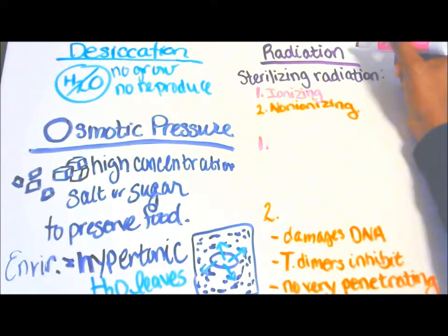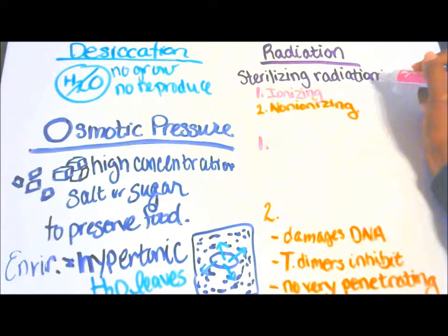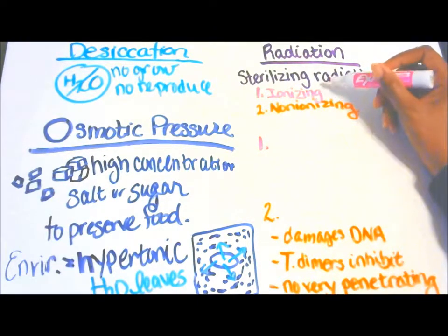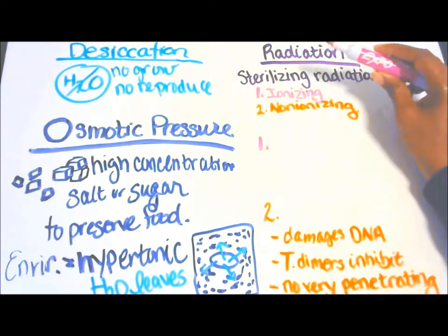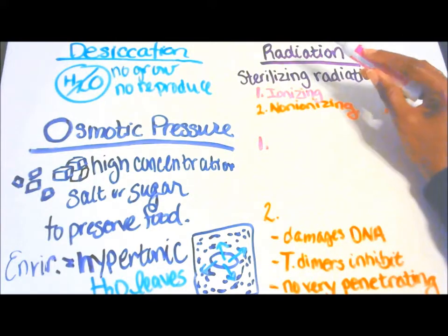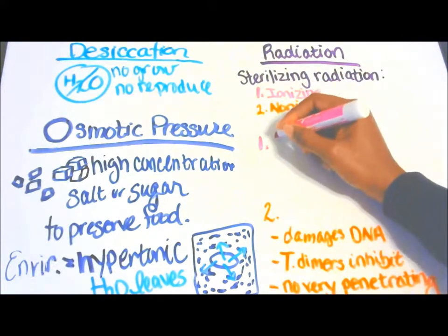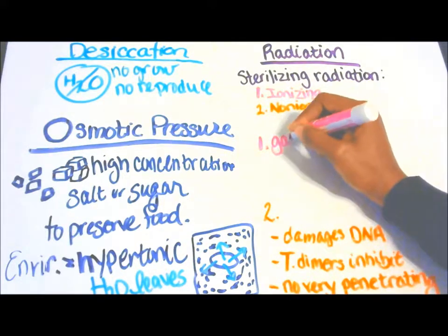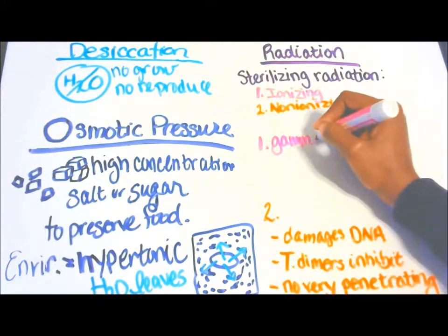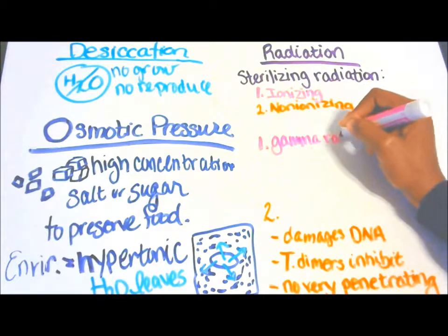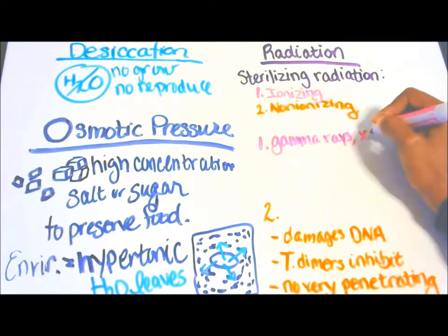In radiation we have sterilizing radiation: one, ionizing radiation, and two, non-ionizing radiation. So one, we have ionizing radiation which is gamma rays, x-rays.